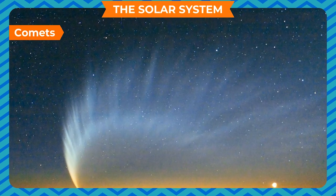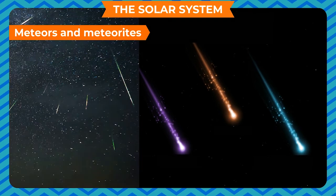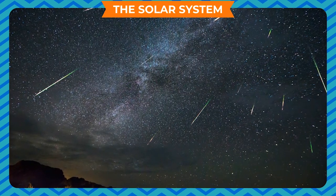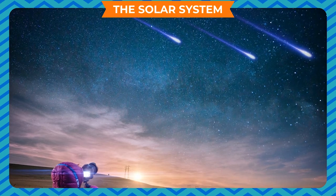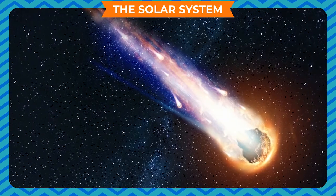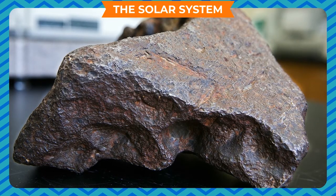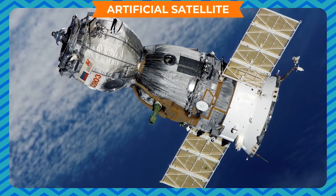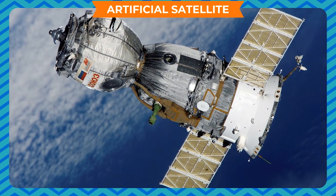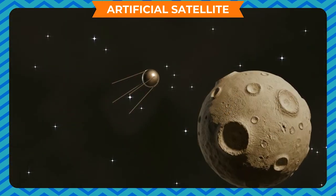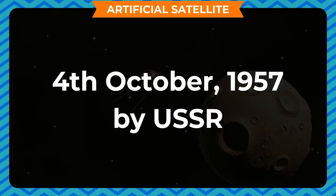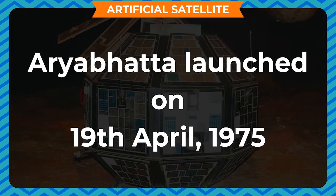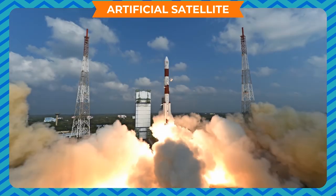Meteors: Meteors are small heavenly pieces of stones and metallic rocks which travel at a high speed. When a meteor enters the Earth's atmosphere, it gets heated up and becomes visible. The part of the meteor which does not burn on entering the atmosphere falls down as a meteorite. The size of meteorites varies from a small pebble to blocks weighing a few tons. Artificial Satellite: A man-made object circulating around a planet is called an artificial satellite. The first artificial satellite was Sputnik 1, launched on 4th October 1957 by the USSR. The first Indian satellite was Aryabhatta, launched on 19th April 1975. Since then, India has launched a number of satellites.